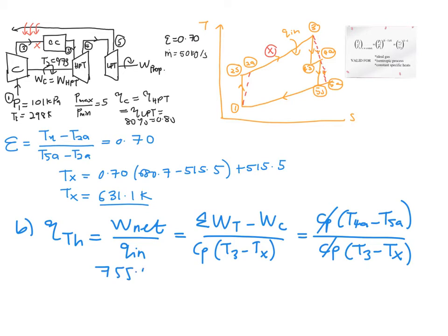755.5 minus 680.7 over your T3, which is actually 973 minus your TX, which is 631.1. If you want to leave it in percentage, the thermal efficiency is equal to 21.9%.